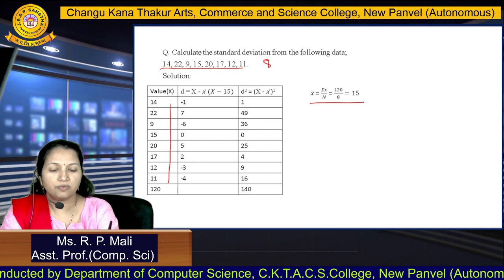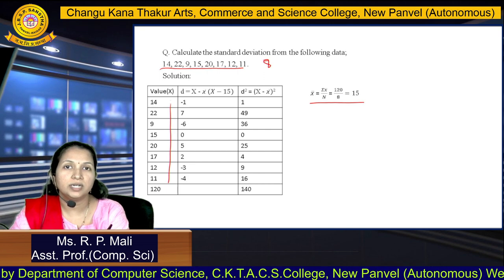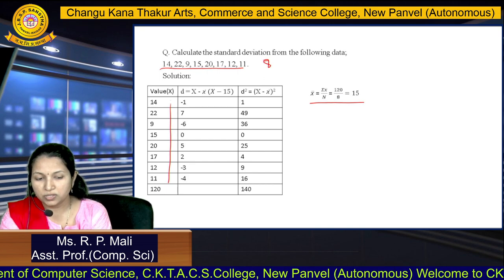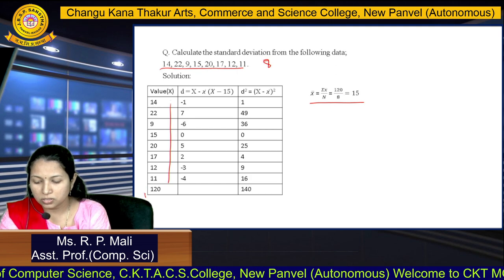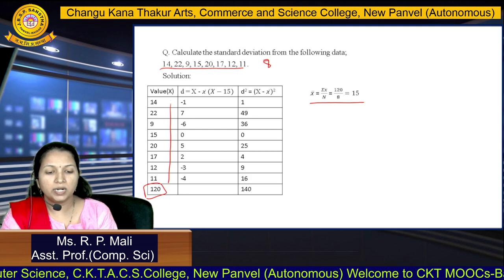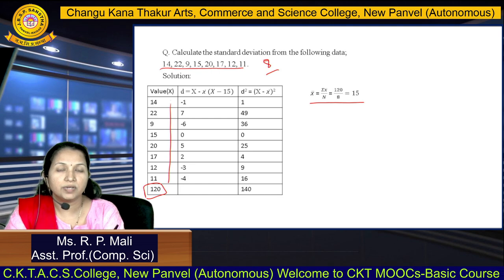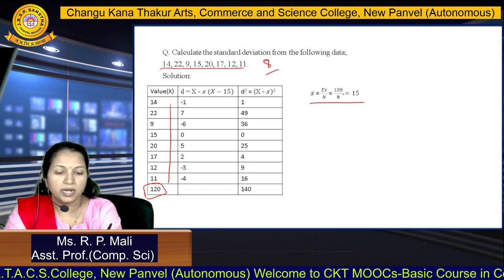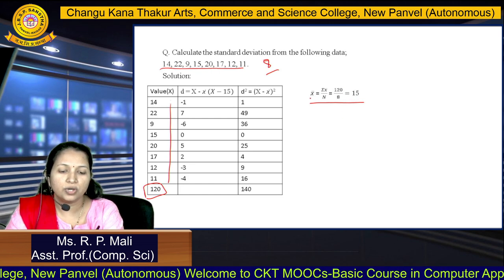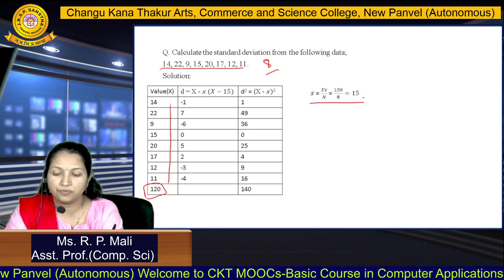The formula for the mean is X̄ = ΣX / N. The summation of this column is 120 and there are 8 observations, so 120 divided by 8 equals 15. Therefore X̄ = 15.